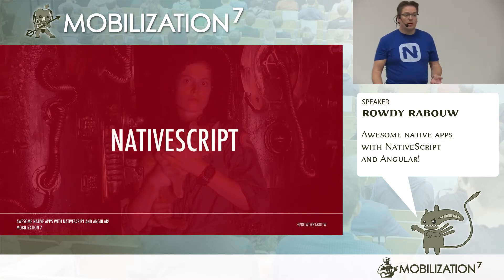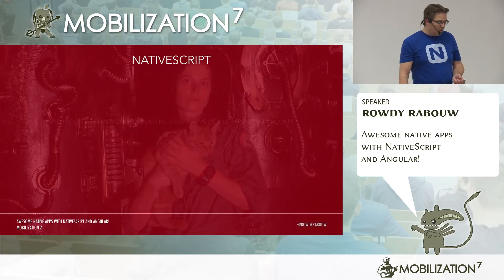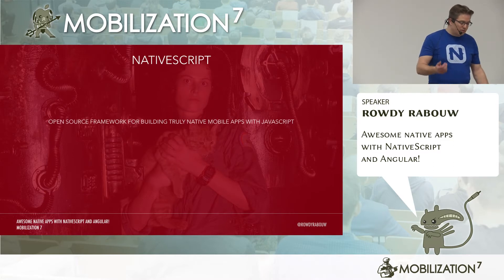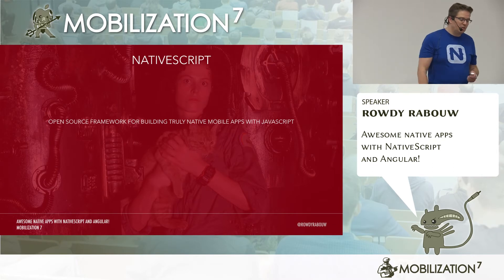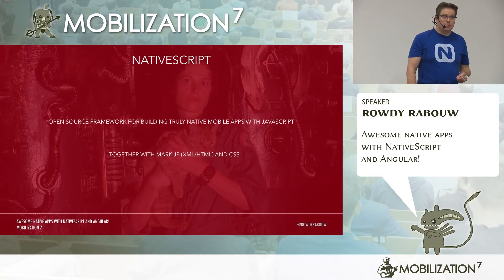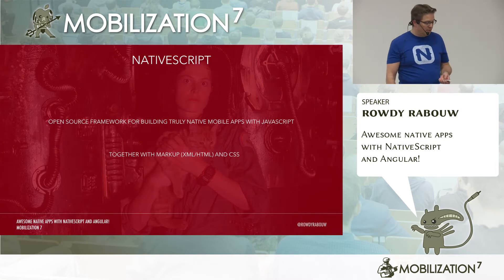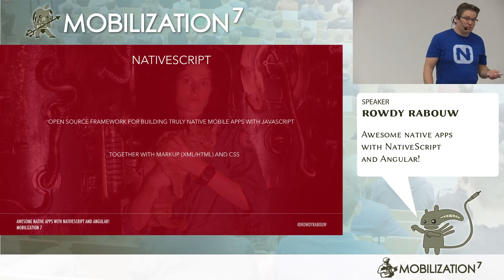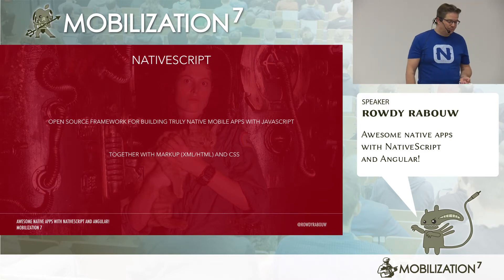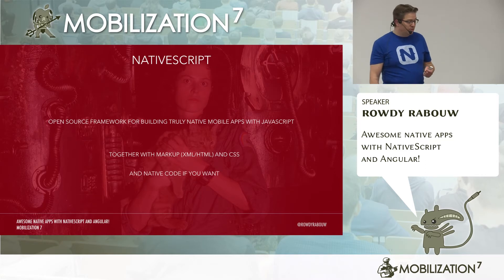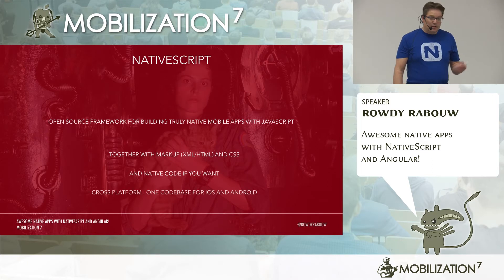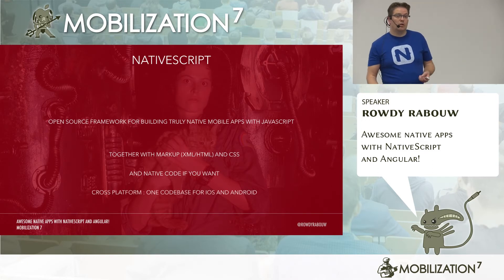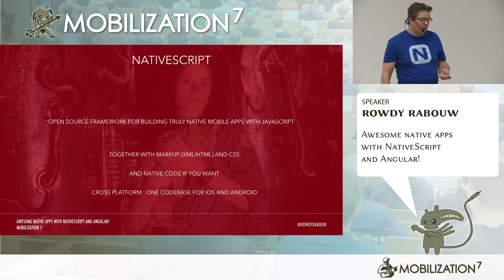Let's first talk about what NativeScript is. NativeScript is an open source framework for building truly native apps, but with JavaScript. You use it together with markup — that could be XML or HTML. You style it with CSS, just like you would on a website. You can also use native code. And it's cross-platform, so you have one code base for your app on Android and on iOS.